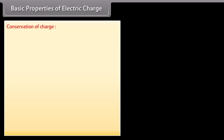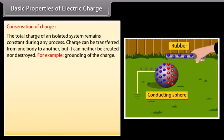Conservation of charge: the total charge of an isolated system remains constant during any process. Charge can be transferred from one body to another, but it can neither be created nor destroyed. For example, grounding of the charge.